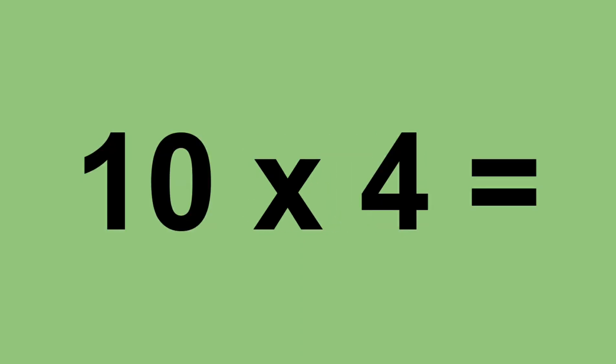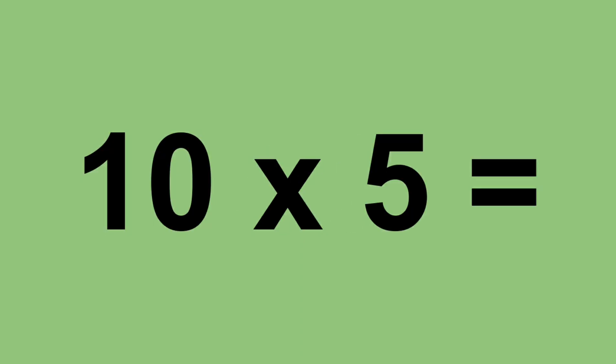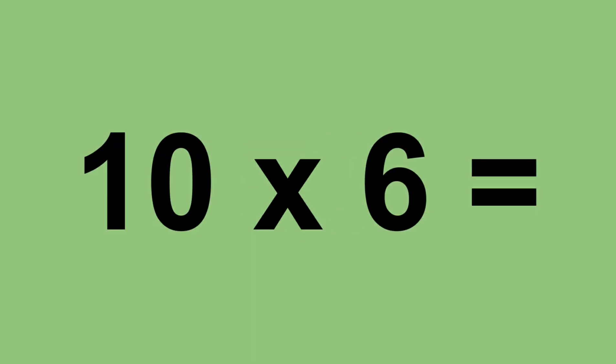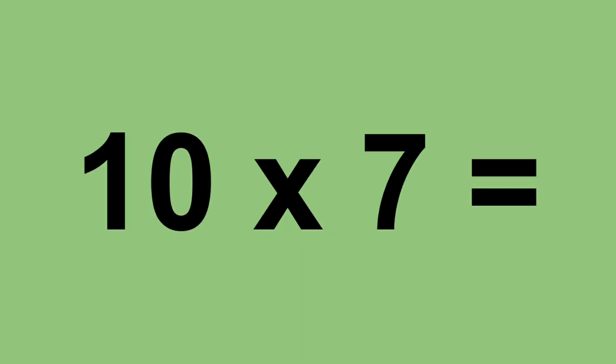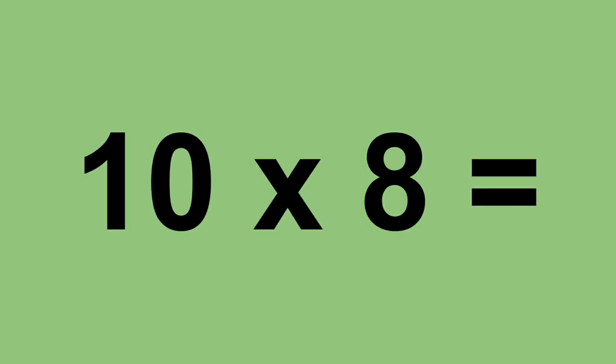Ten times four equals forty. Ten times five equals fifty. Ten times six equals sixty. Ten times seven equals seventy. Ten times eight equals eighty.